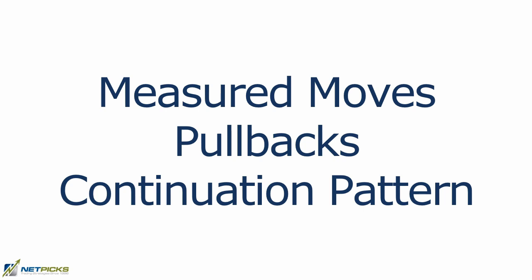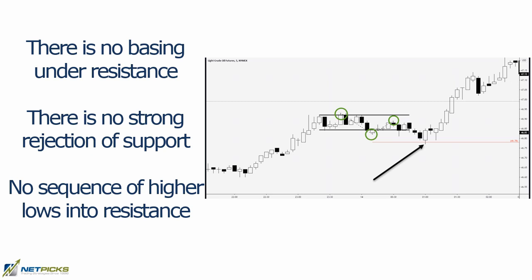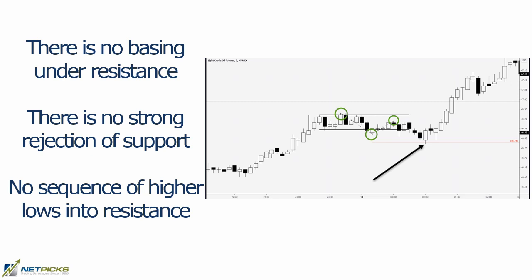This is a really good technique where you can avoid taking one-legged pullbacks that result in a simple correction where you get stopped out and then see price go in your direction. Looking at the crude chart — it's a bullish trend, price is in a trading range, and it's missing the criteria for a breakout trade: no basing under resistance, no strong rejection off support, no sequence of higher lows into resistance. Then we get a break to the downside. Measuring from the first green circle to the bottom green circle and projecting that distance from the last green circle — A-to-B equals C-to-D — price ticked right to that zone and took off to the upside.